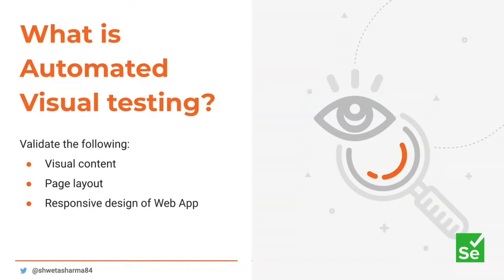Let me brief you on the concept. When you say you're going to test visuals, you mean testing the user interface or graphical user interface — how a particular interface looks on several browsers and several mobile devices, because mobile is the current and the future. When you add the prefix 'automated' to this kind of testing, it means you're going to automate the verification of the user interface.